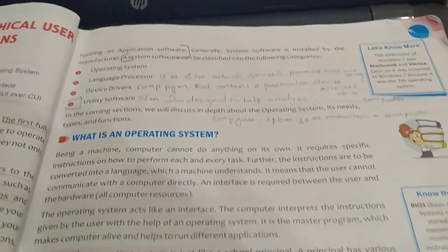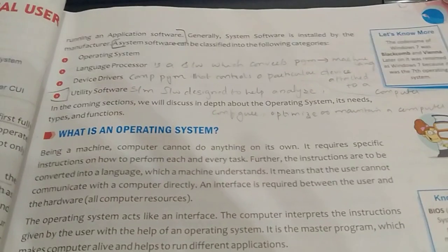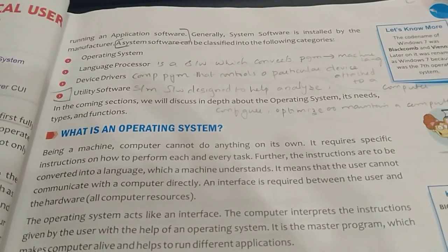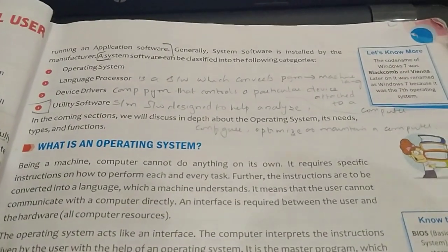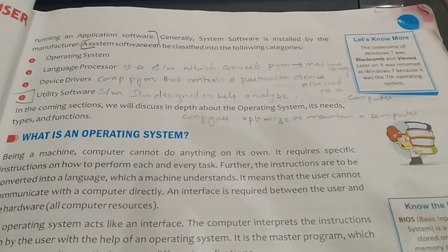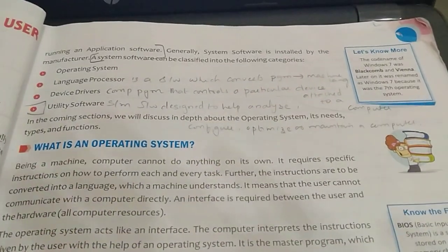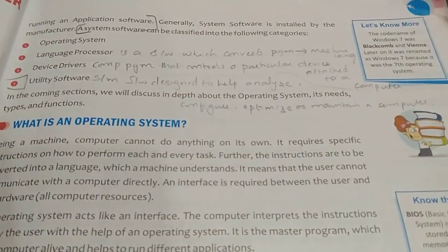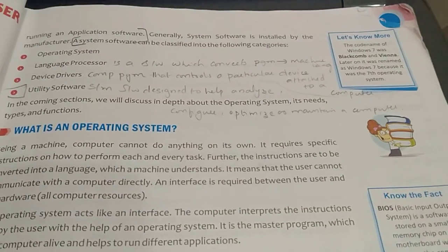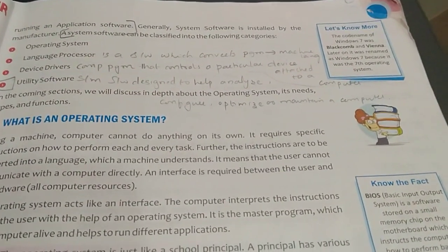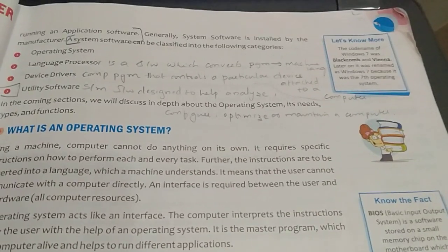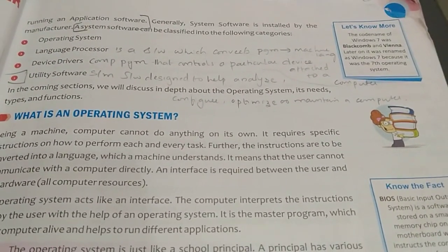System software's example is the operating system — Windows, Unix, Linux. Without the operating system, application software cannot work. All application software such as Word, Excel, and PowerPoint are installed on the operating system, which acts as a platform. Take the example of an annual function: there is a stage, and on that stage you perform a dance. Dance is your application software; the stage is your system software. System software acts as a platform where you can run application software.